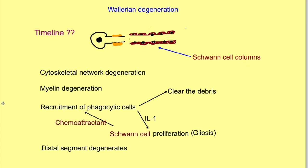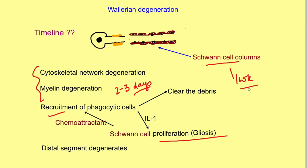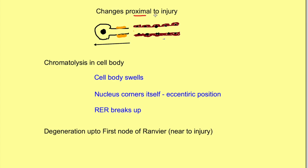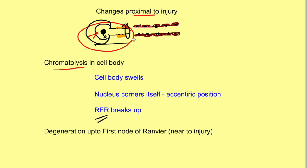Regarding the timeline: functional loss is immediate; cytoskeletal degeneration and myelin and membrane loss occur over two to three days; recruitment of phagocytic cells follows; and Schwann cell proliferation and column formation takes around one week. For proximal changes, chromatolysis starts in the cell body — the soma swells, the nucleus moves to an eccentric position, and the rough endoplasmic reticulum shows some breakdown. There is also axonal degeneration up to the first node of Ranvier near the injury.